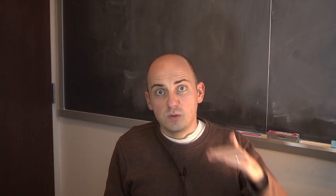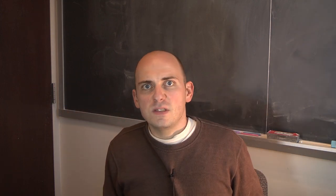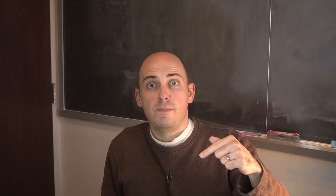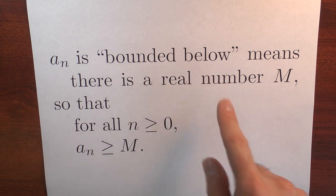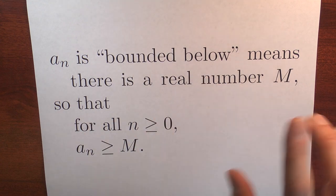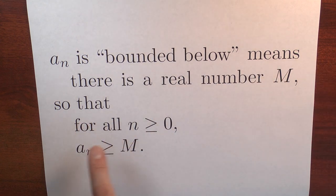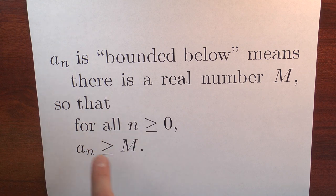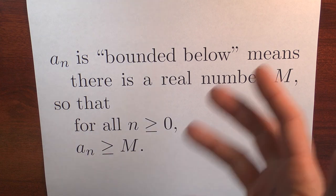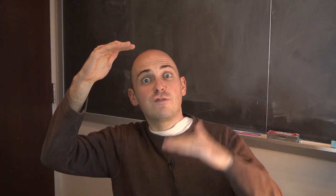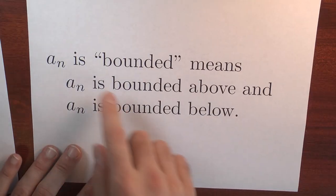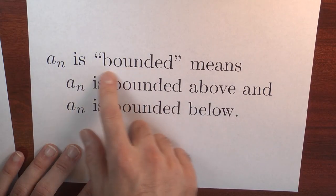I can also bound a sequence from below, meaning that the sequence doesn't become too negative. To say that a sequence is bounded below means that there's some real number m — that's the bound — so that for any index n, the nth term in the sequence is no smaller than that bound m. Sometimes a sequence will be bounded both from above and from below, and in that case we just say that the sequence is bounded.